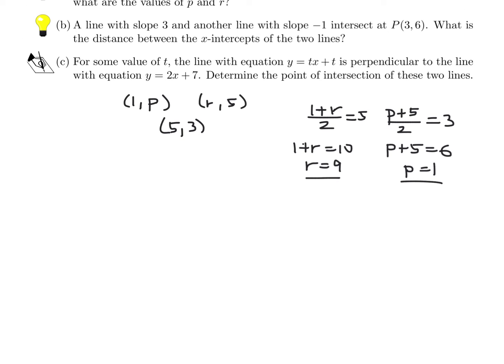A line with slope 3 and another line with slope -1 intersect at (3,6). What is the distance between the x-intercepts of these two lines? We have to figure out the equations of lines. The first one, y = mx + b. The slope is 3, so that's 3x + b. This is a point on that line because it's an intersection point. So when x is 3, y is 6. This looks like b would be -3. So the equation is 3x - 3.